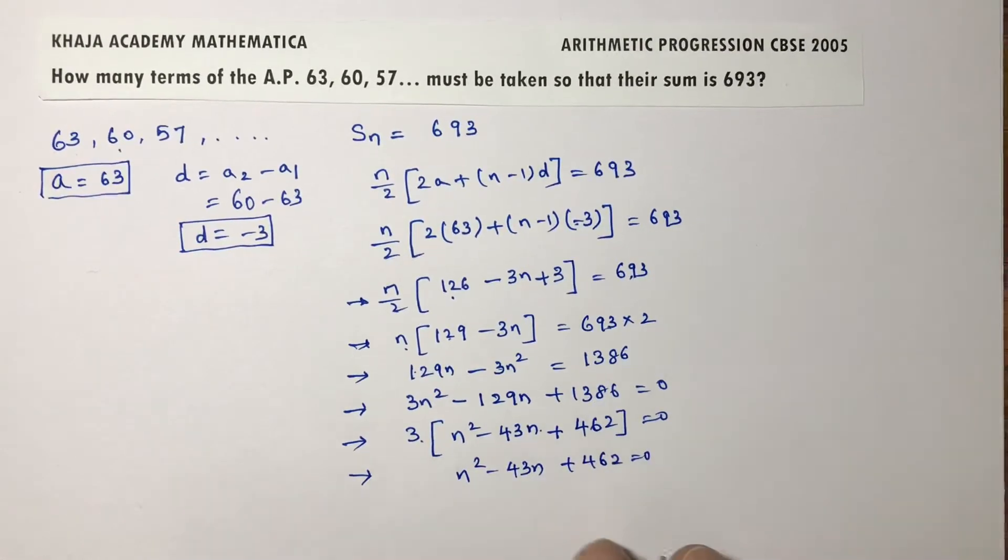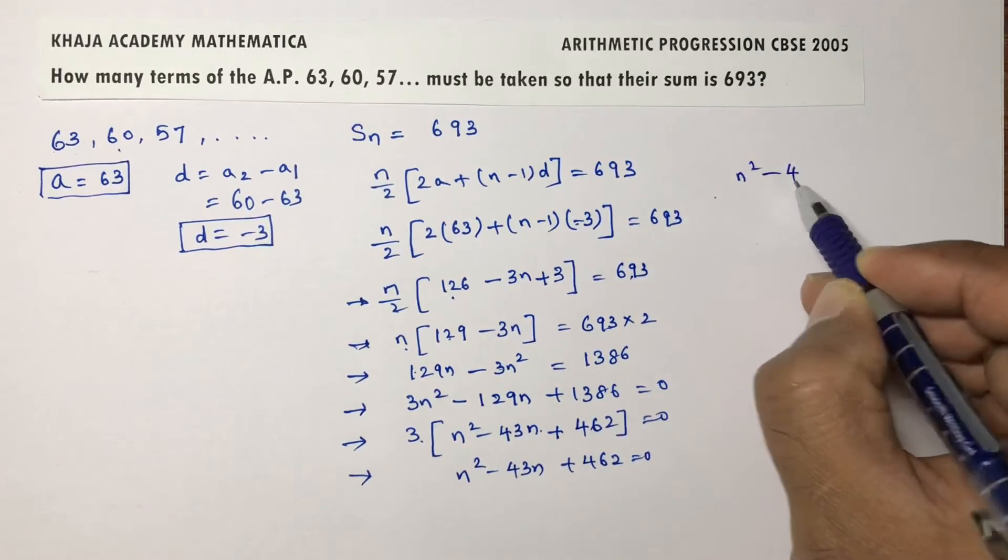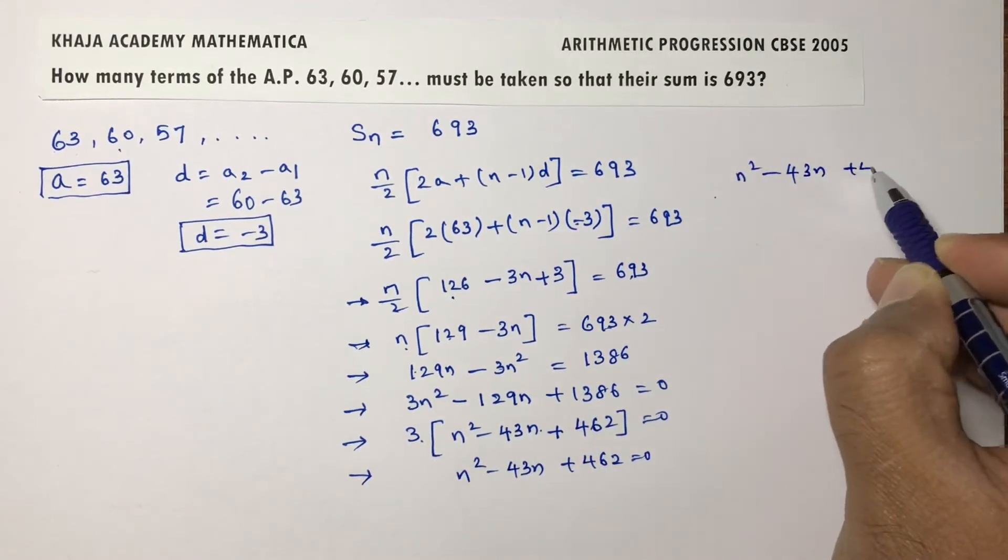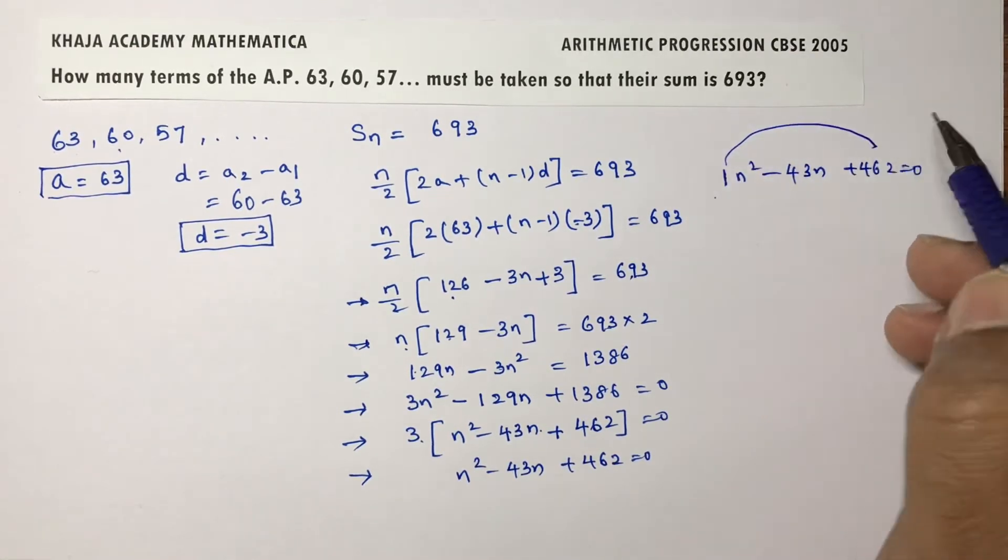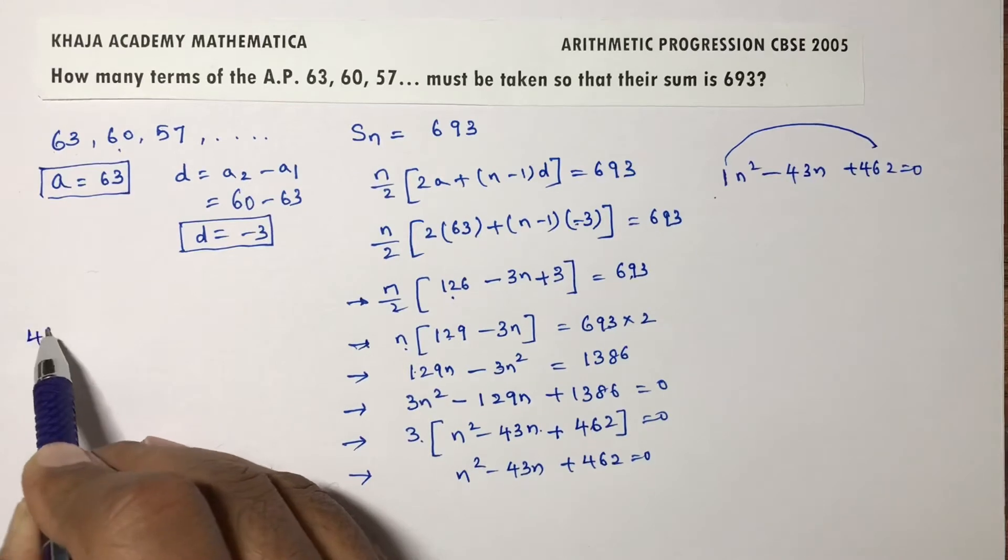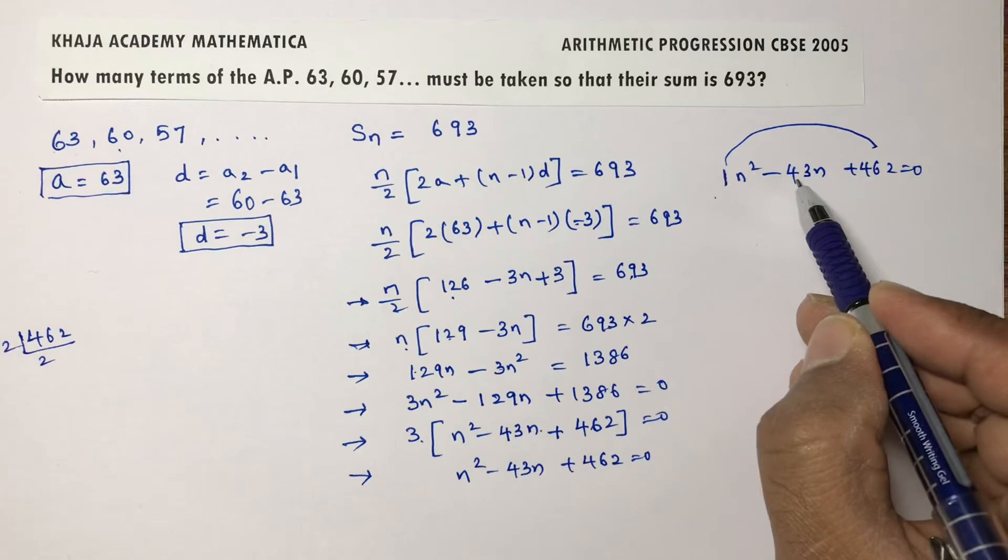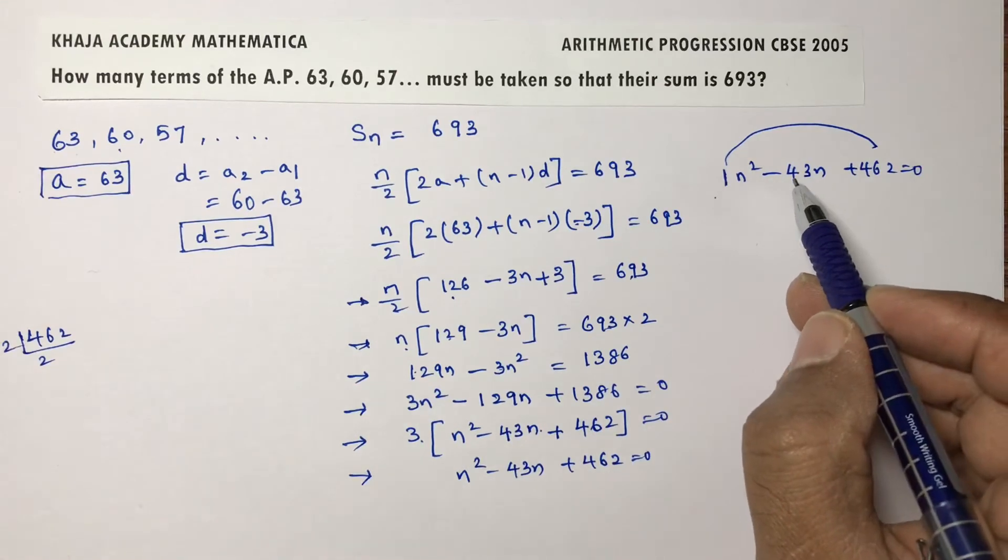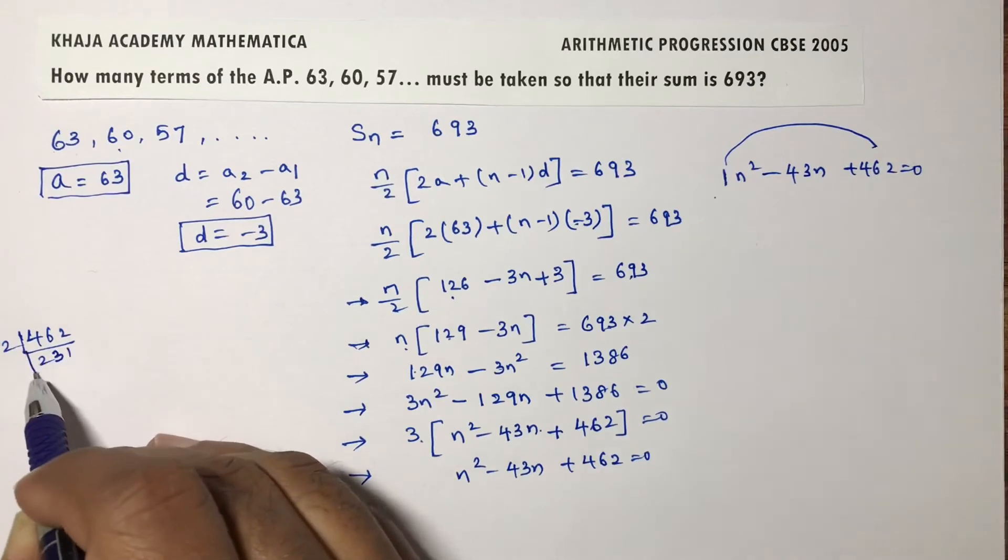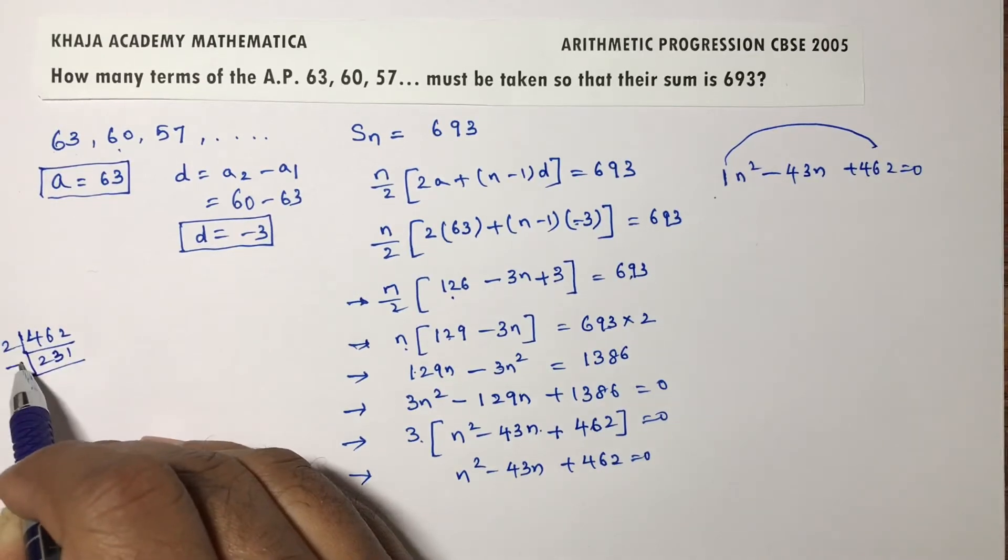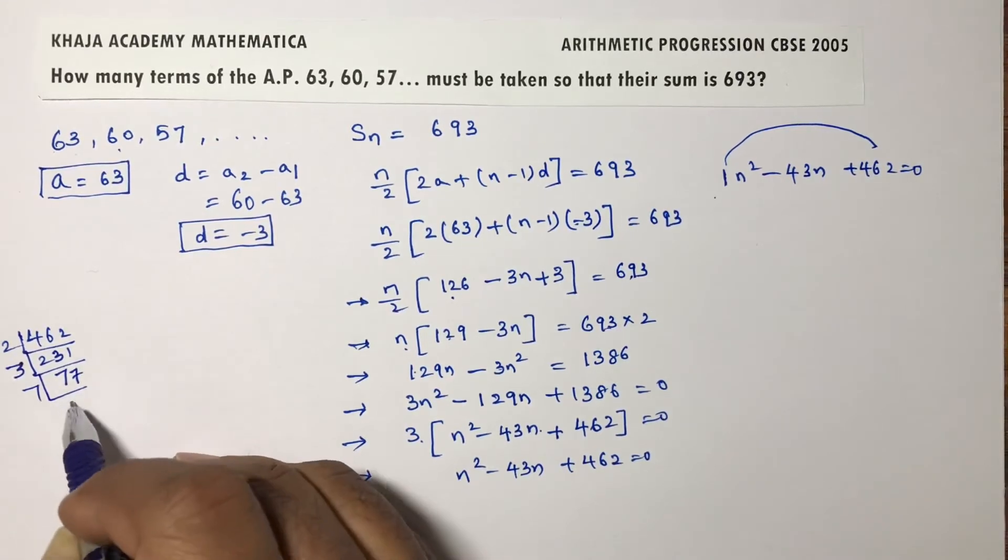Now I have to factorize this. n square minus 43n plus 462. 1 into 462 gives 462. Do prime factors of 462. You need to get the product, and if you add or subtract you need to get 43. So 2, 3, 7, 7, 11.